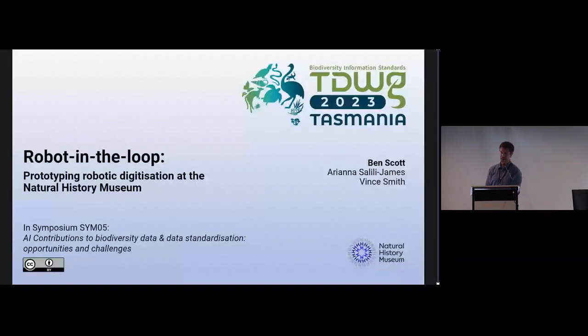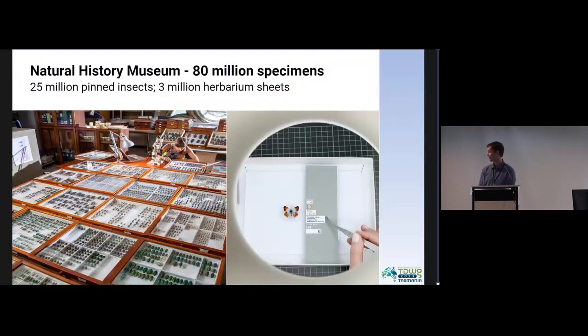I'm Ben Scott, head of AI at the Natural History Museum in London, and I'm going to talk about robotics and digitization at the Natural History Museum. We have a huge collection, 80 million specimens, and we want to digitize them all.